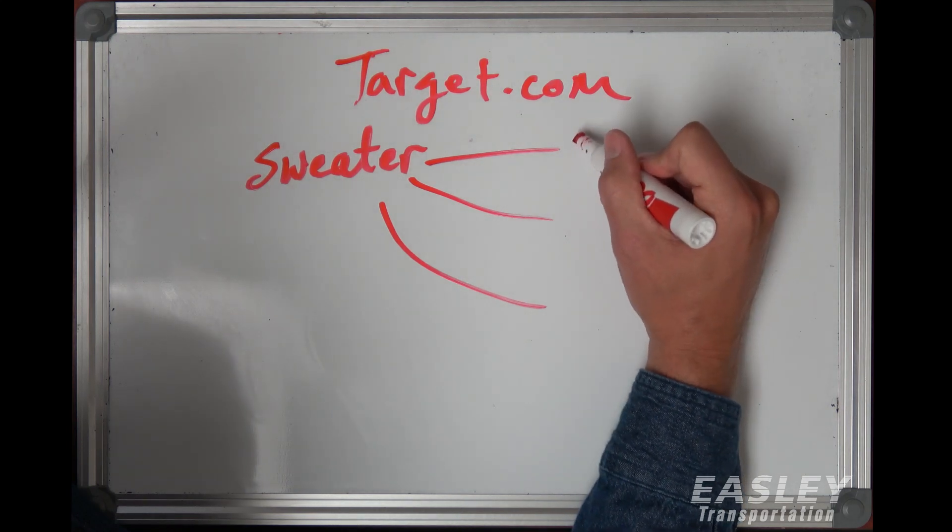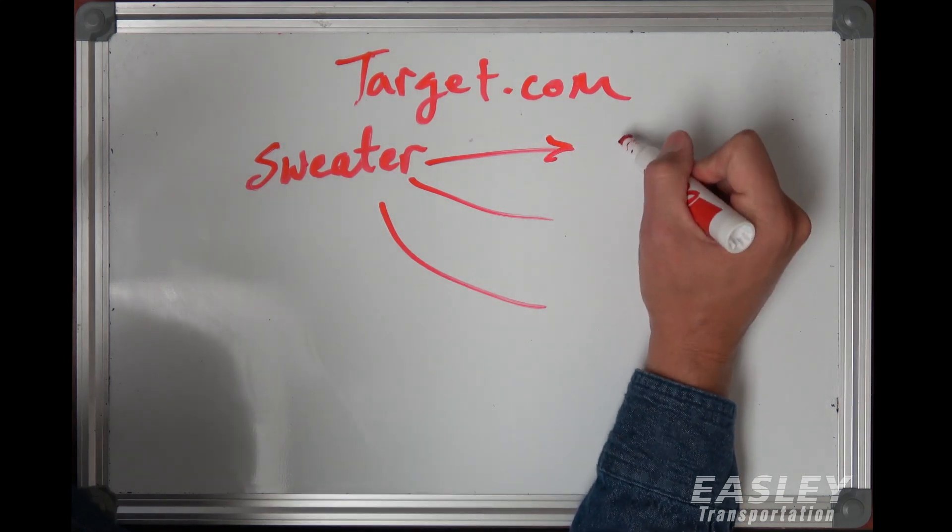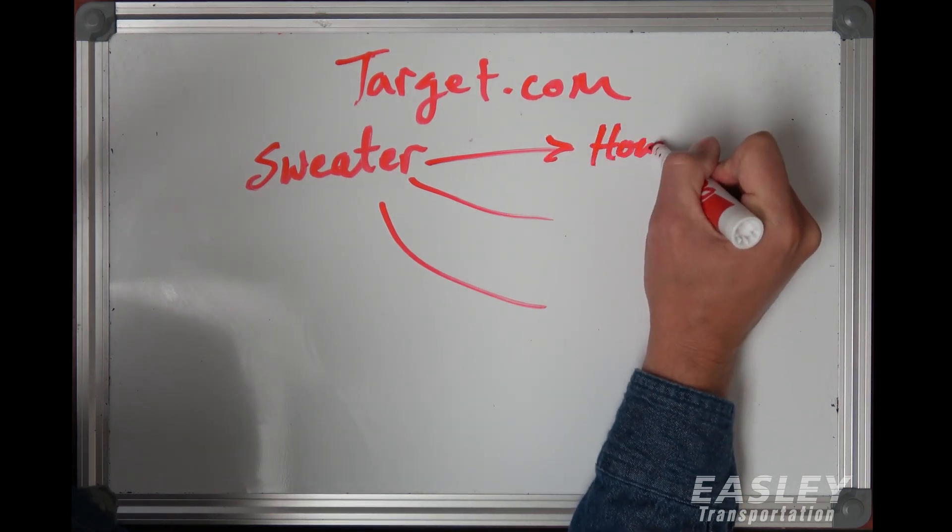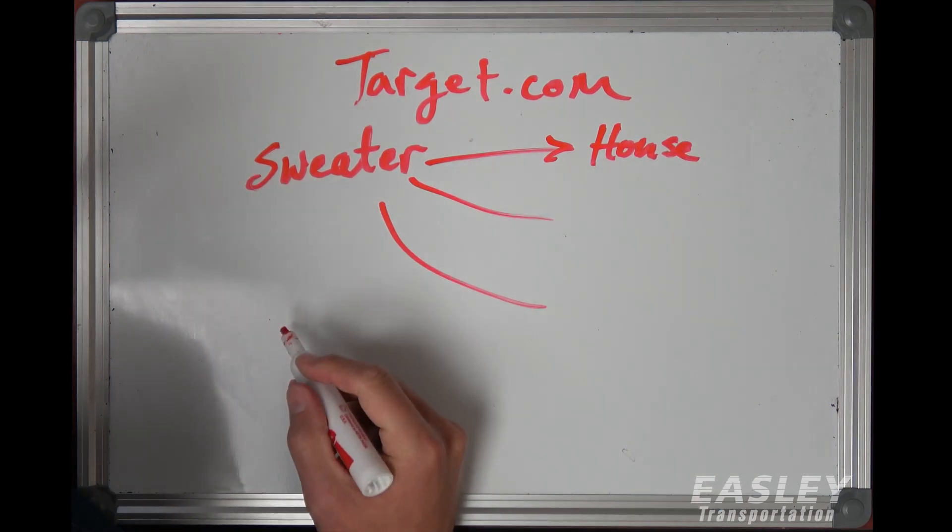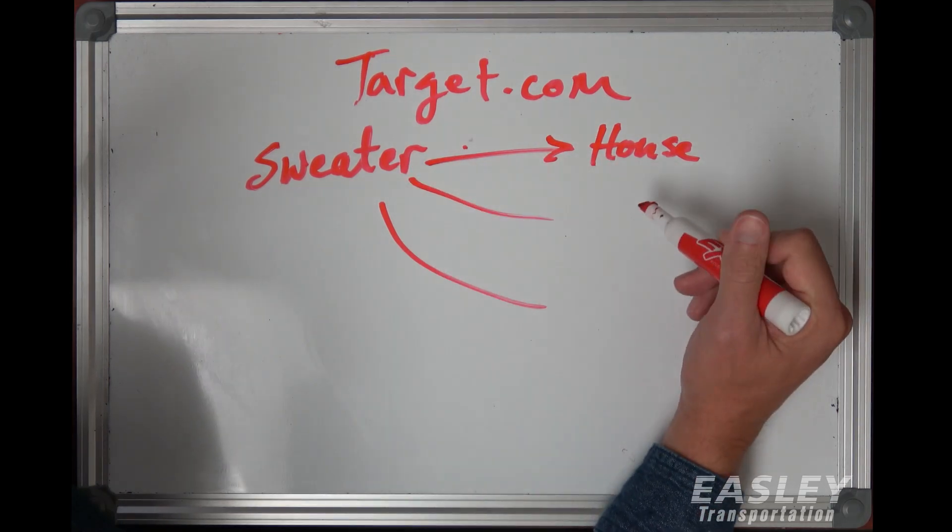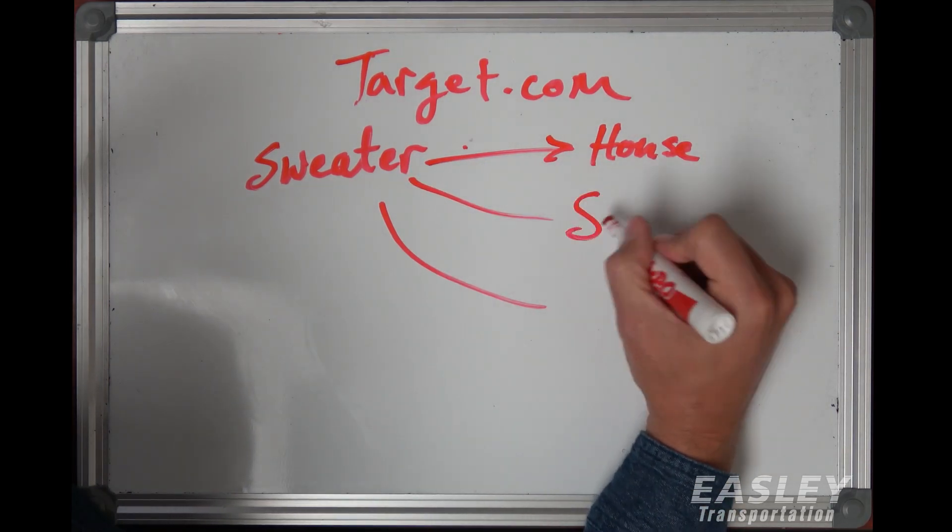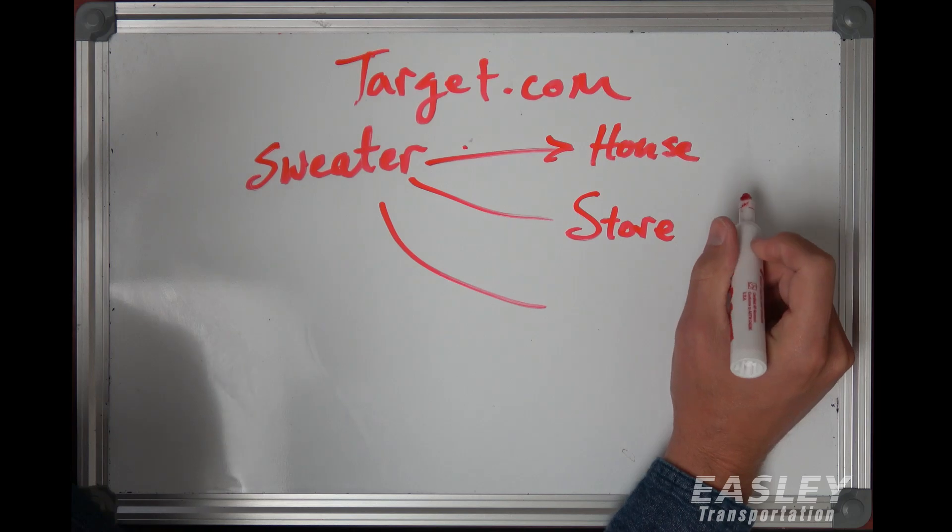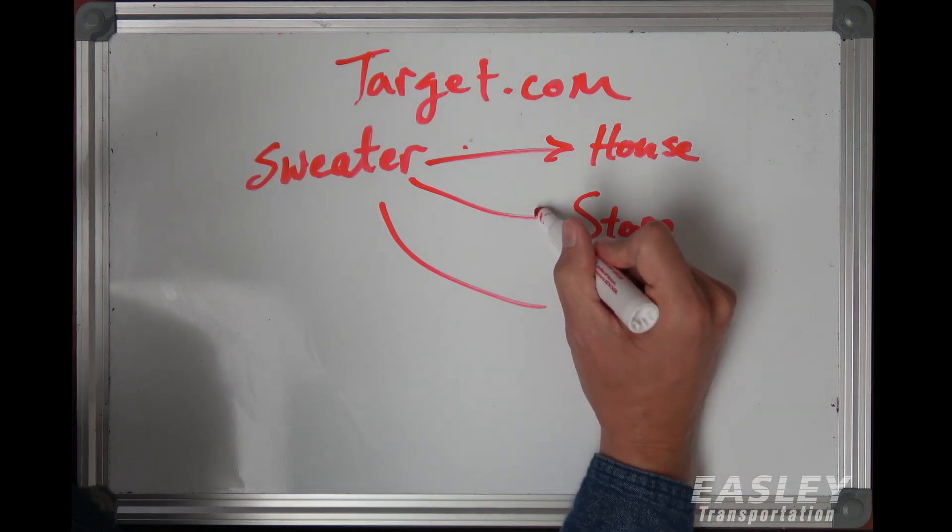Now here's the way this can work with omni-channel. I'm going to get to pick - I want to buy that sweater and send it to my house, that's one option. So I'm buying the sweater and it's getting shipped to my house, that's one channel. Or I'm buying the sweater and the sweater's actually in the store right now, and they're going to have it in will call for me, so I'm going to do a store pickup.